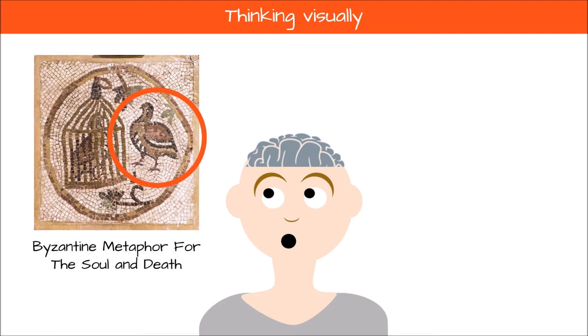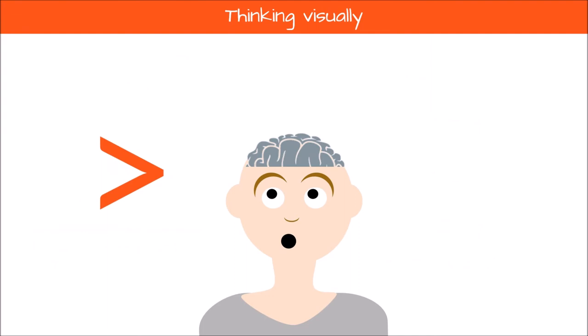The bird outside the cage is therefore the soul after being liberated by death. In science, we find the famous representation of the DNA molecule. In mathematics, we also find many visual analogies that help us remember, such as the meaning of the symbols greater than and less than.